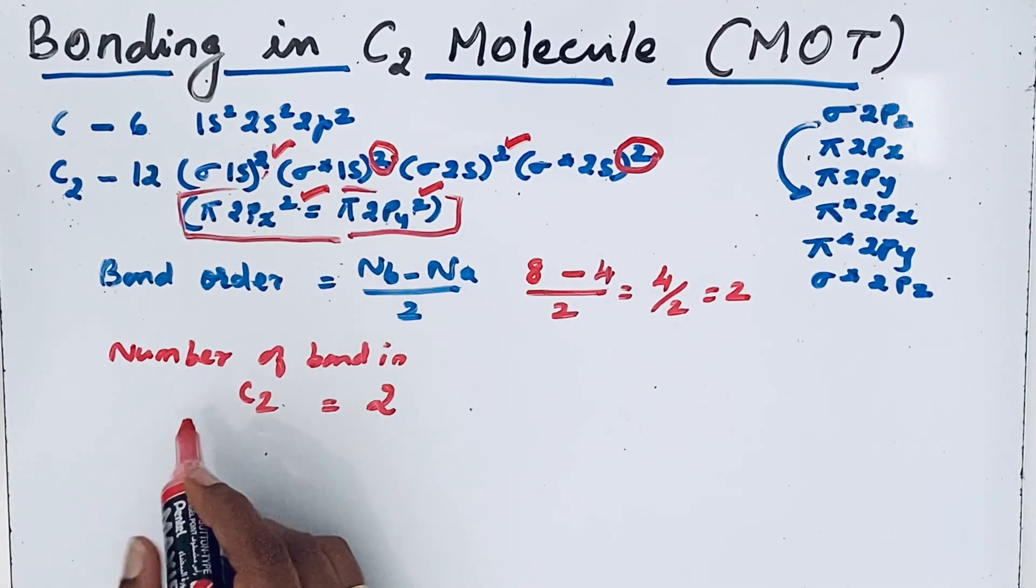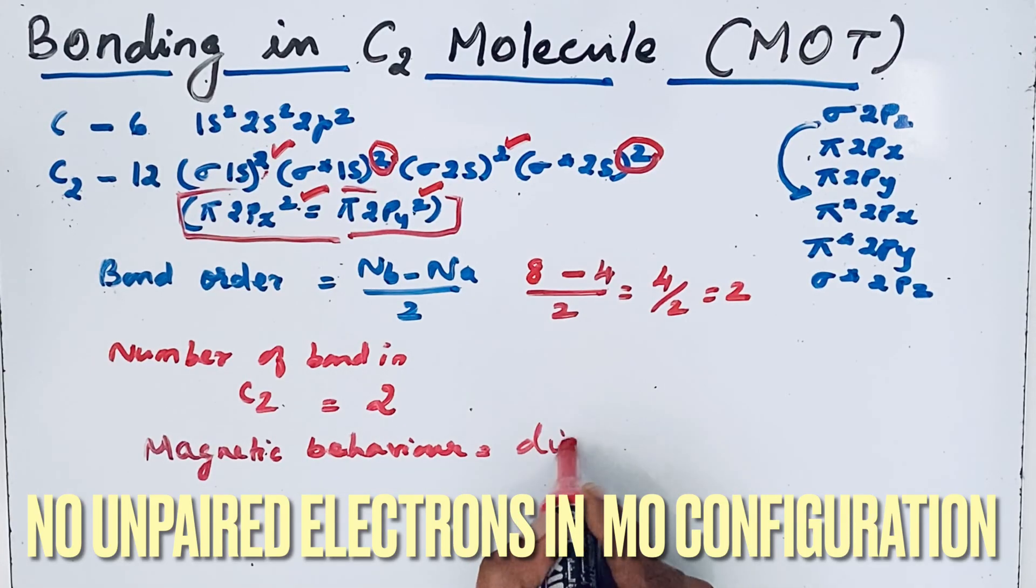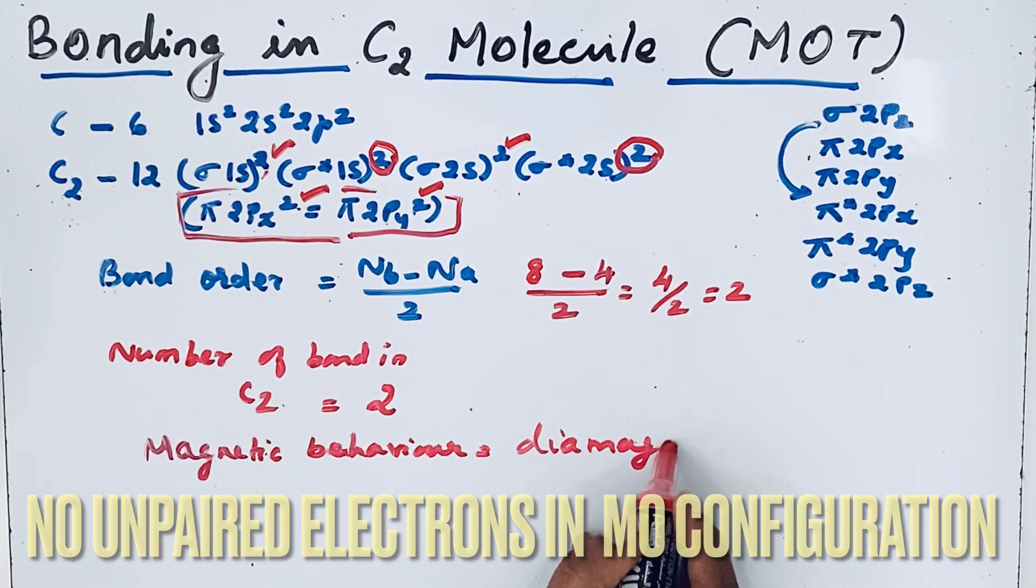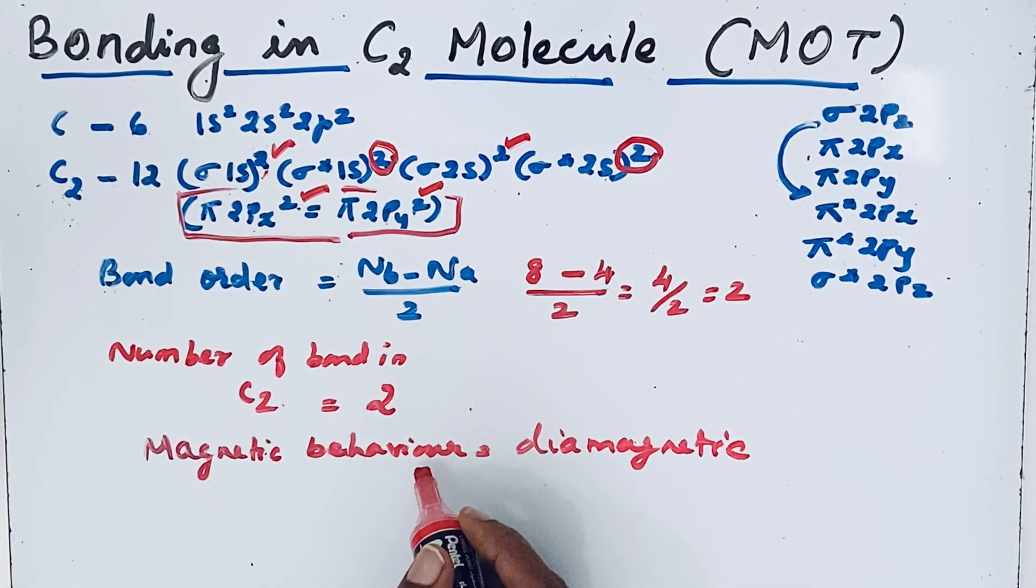Now let us see the magnetic behavior. Diamagnetic. It is actually diamagnetic. C2 molecule has indeed been detected in vapor phase.